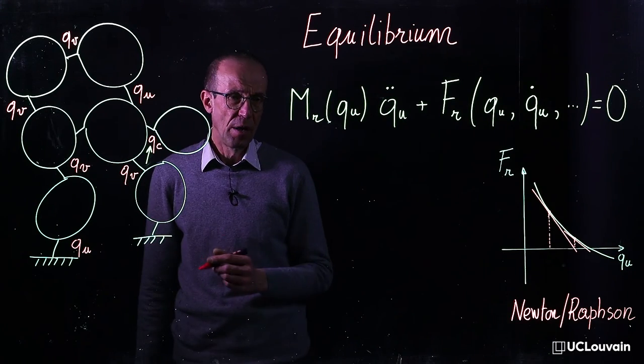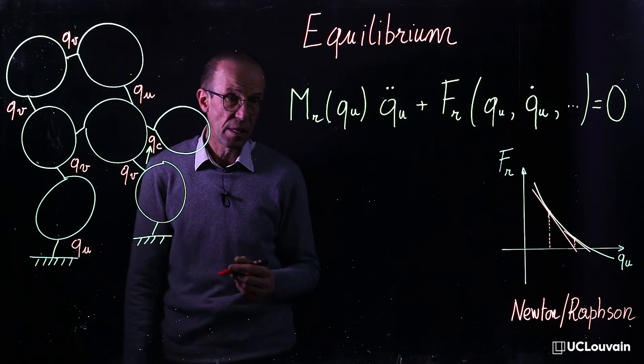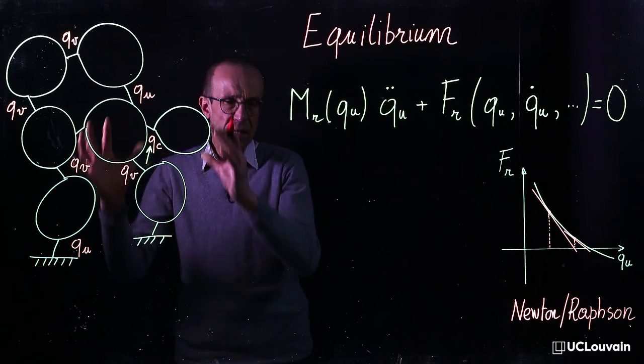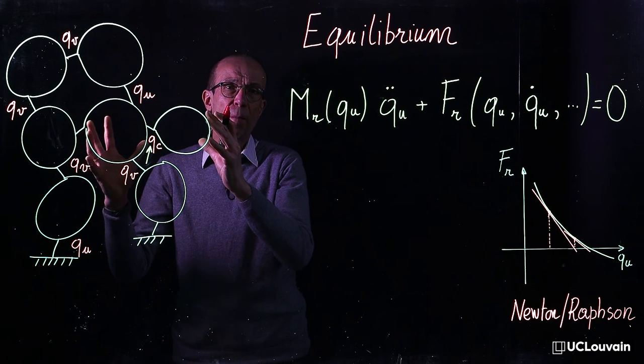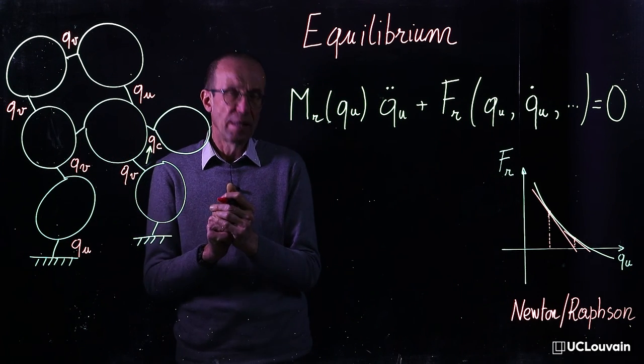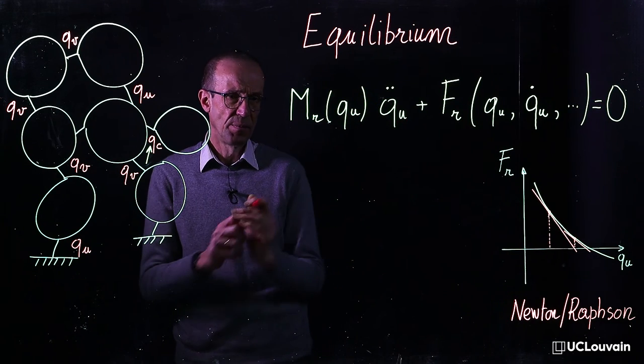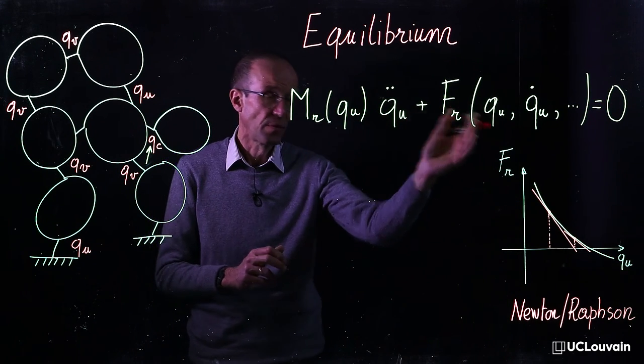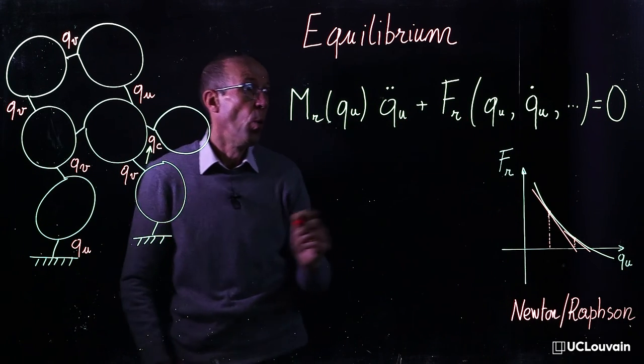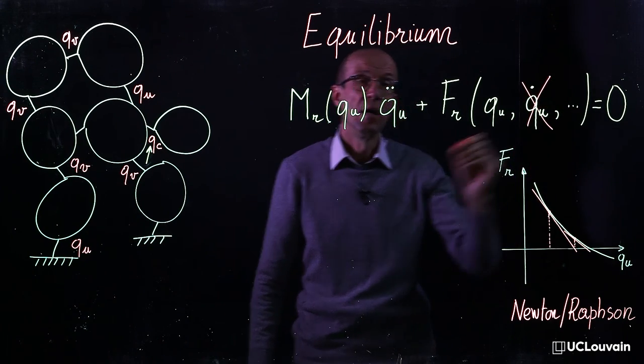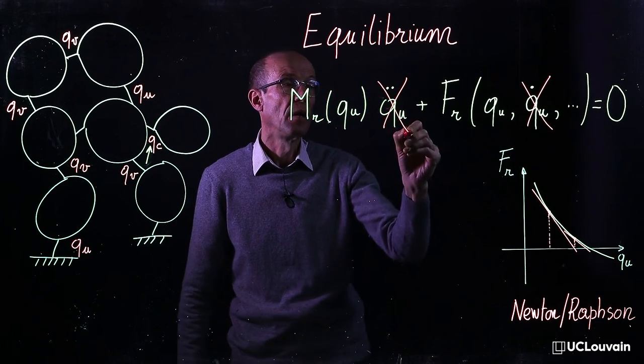Another useful numerical analysis consists in finding the static equilibrium of a multibody system, that is the value of the independent coordinates at rest, when there is no more velocity and no more acceleration.